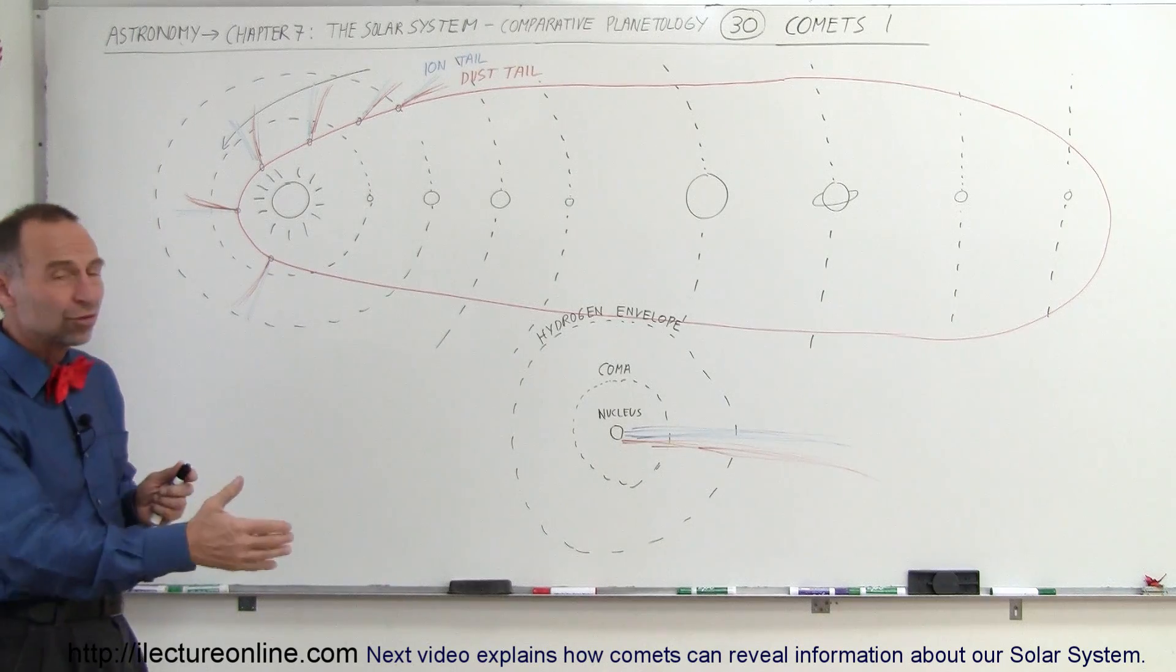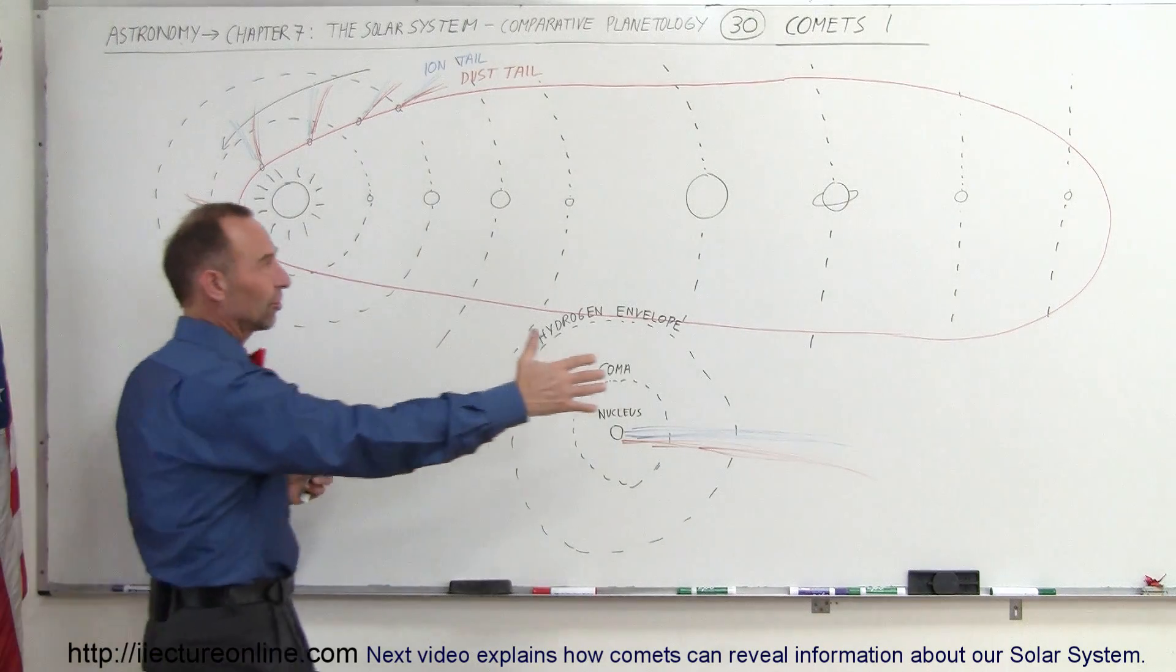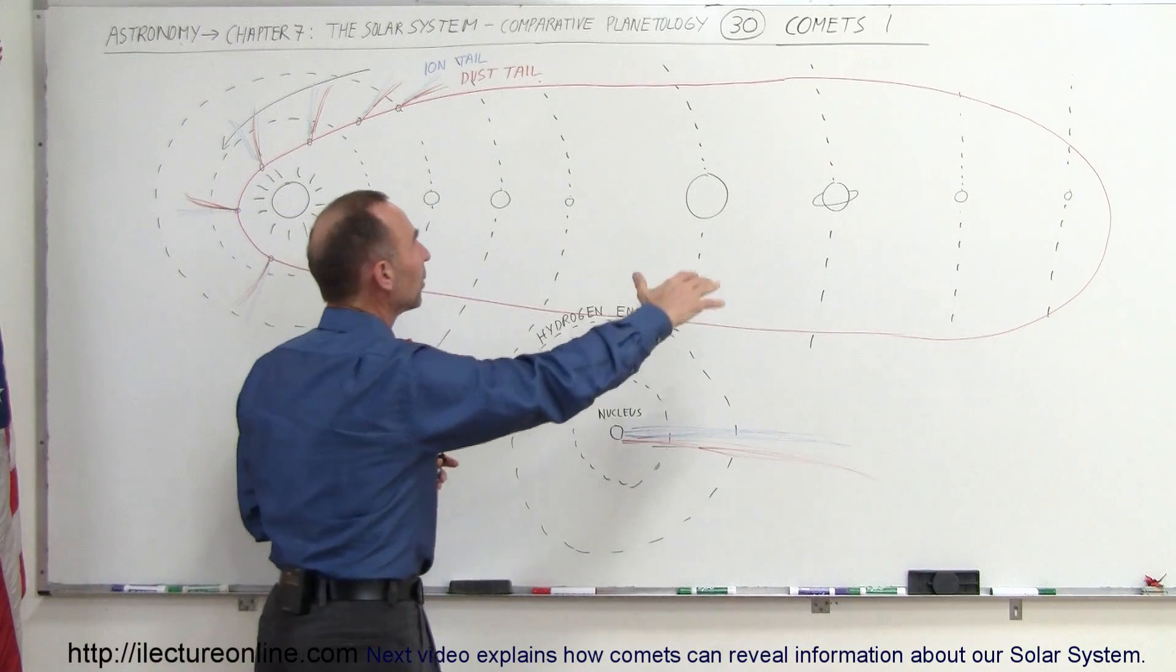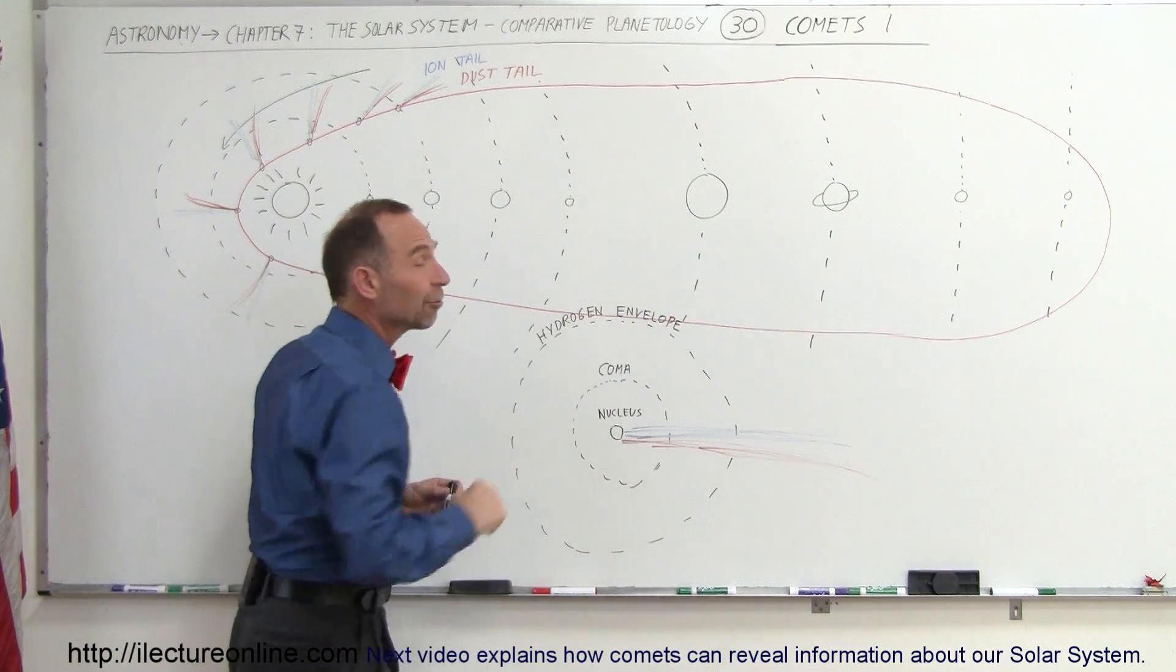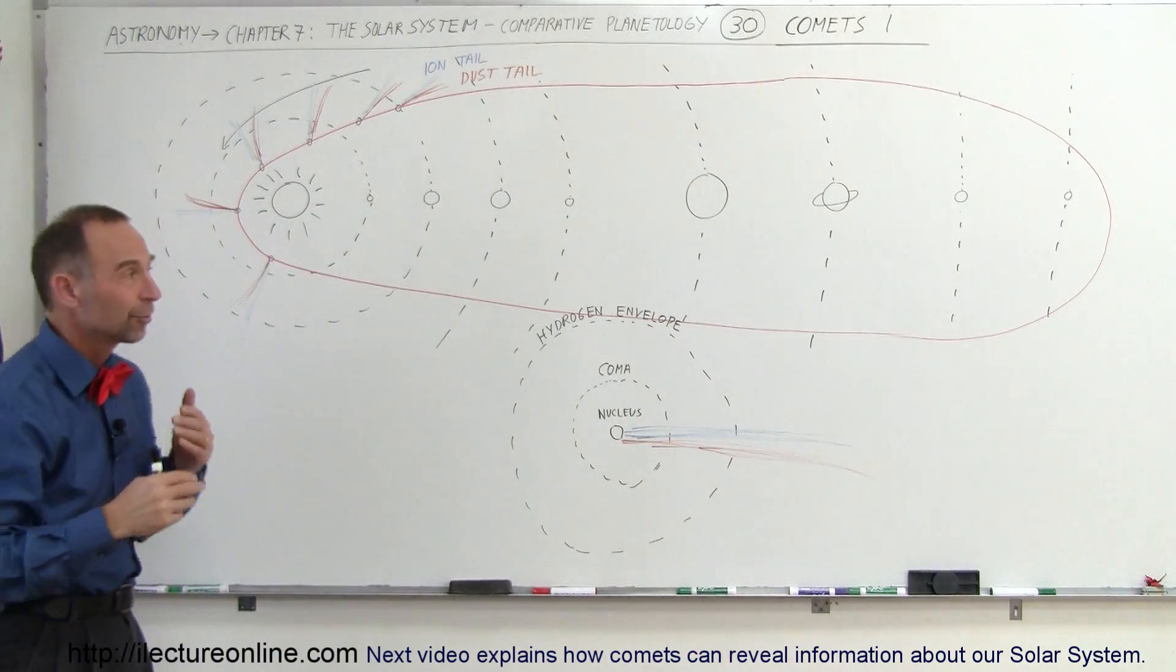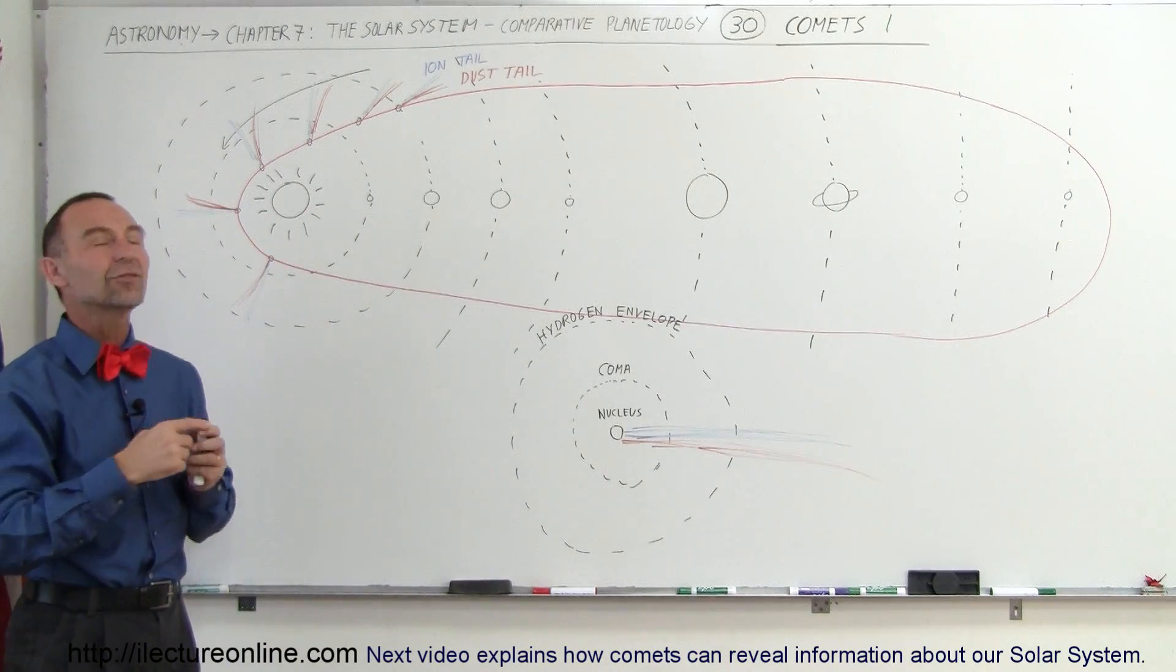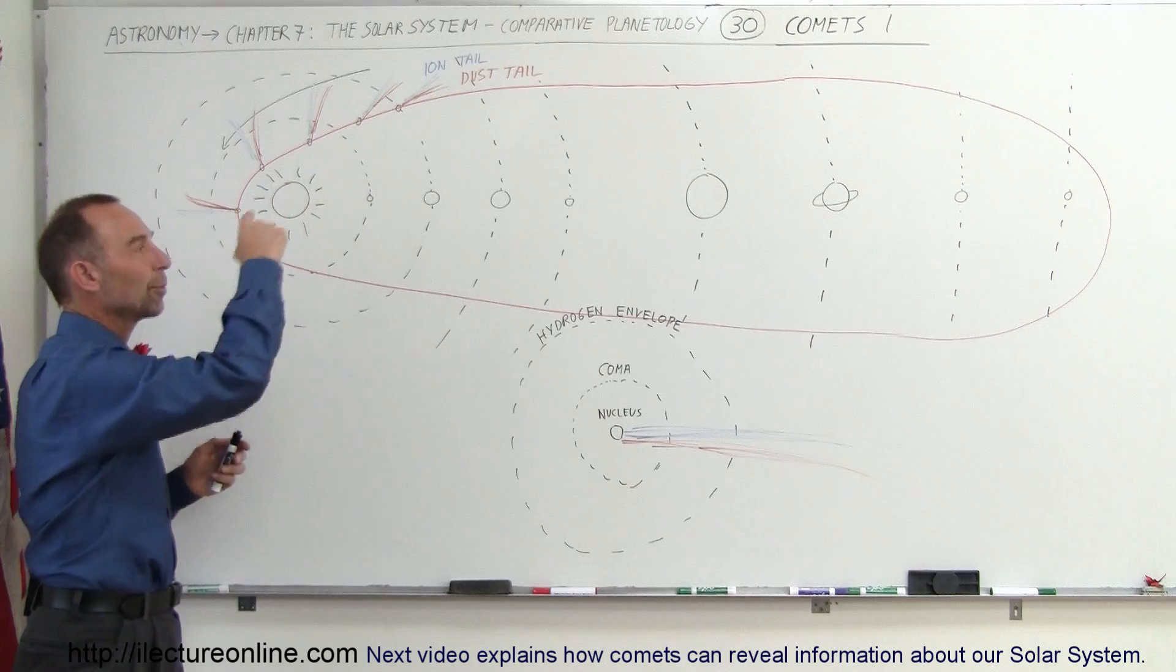When they come streaking in from the outer reaches of the solar system, they tend to have very elliptical orbits. They come in and revolve around the sun and go right back out where they came from. Sometimes comets come from so far away that it takes them thousands of years to make one trip around the sun.